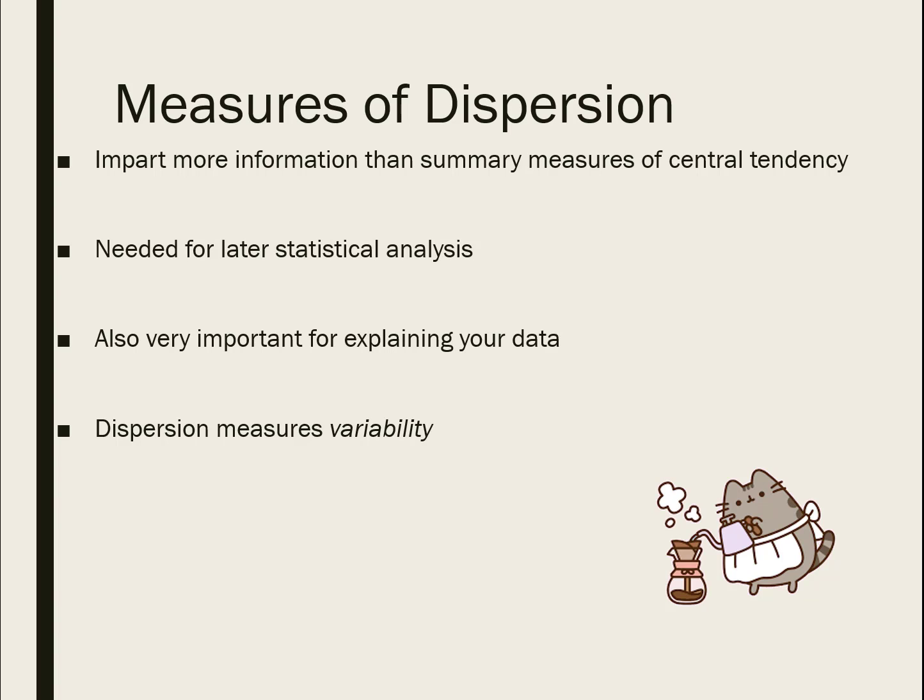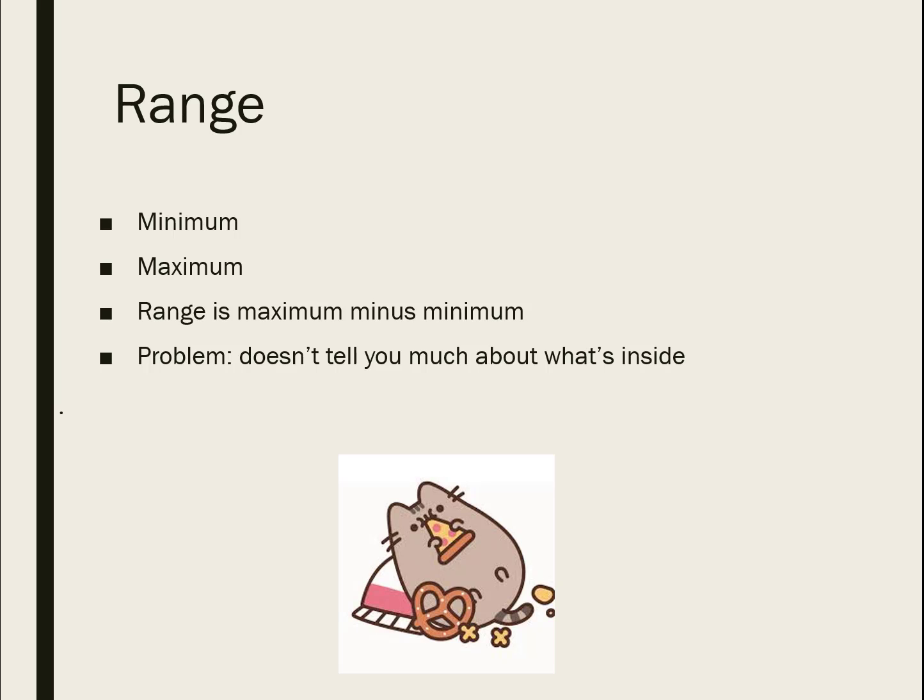Next up, measures of dispersion. Measures of dispersion are another summary measure used alongside measures of central tendency — usually with the mean or the median. They give you a sense of the spread of your data. Central tendency tells you something about the middle; dispersion tells you something about the extremes or the amount of variability — or wiggliness — in the data.